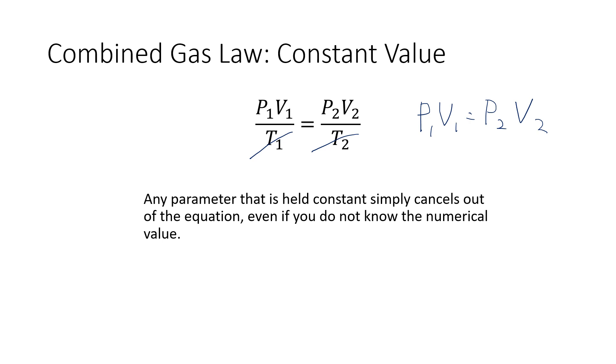Well, let's say instead of temperature being held constant, that pressure is held constant. In that case, the pressures simply cancel out of the equation, and we're left with V1 over T1 is equal to V2 over T2. That's known as Charles' law.